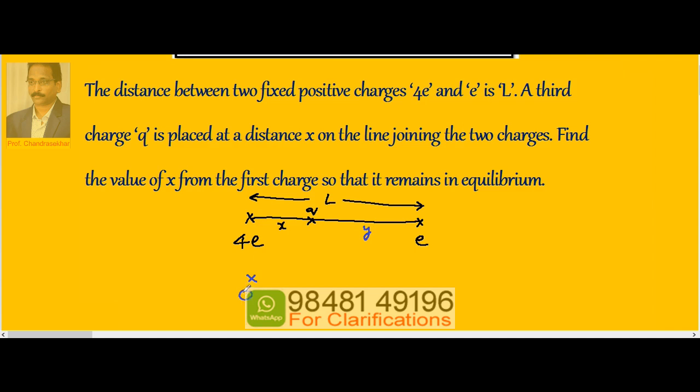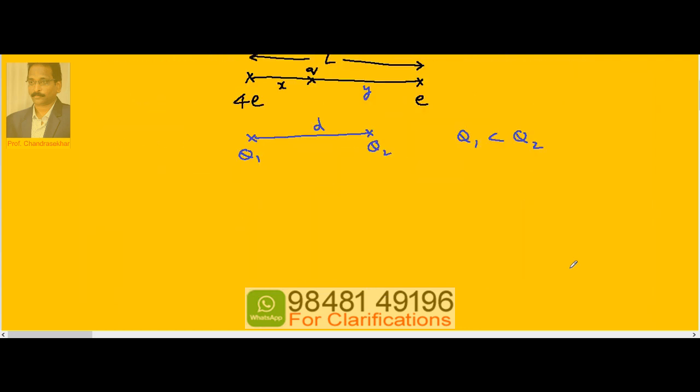If we take any two charges Q1 and Q2 separated by distance D where Q1 is less than Q2, then the position of the null point or equilibrium condition point x is given by D divided by the square root of Q2/Q1 plus or minus 1. The plus sign is for like charges and the point lies in between; minus is for unlike charges and the point lies outside. It is always close to the weaker charge.